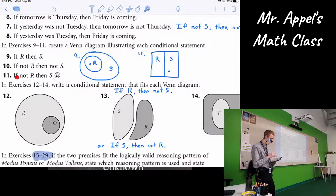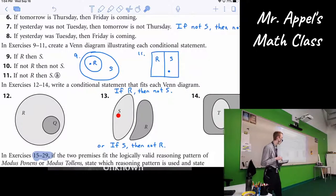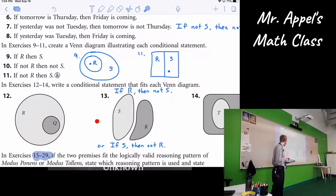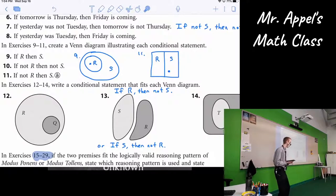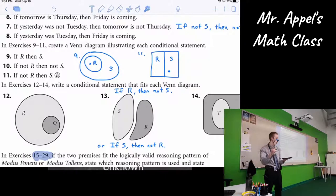And then 13. There's another example actually of the same picture. Right? Two totally separate regions. You could call that if R then not S. Because if you are in this region you can't also be in the other region. Similarly, if S then not R. So whichever one you wanted to start with doesn't matter. You could use either one. Those are the basic versions. All right. Any questions on those exercises so far before we get to the tricky ones?